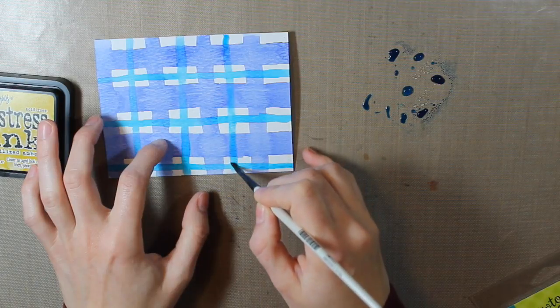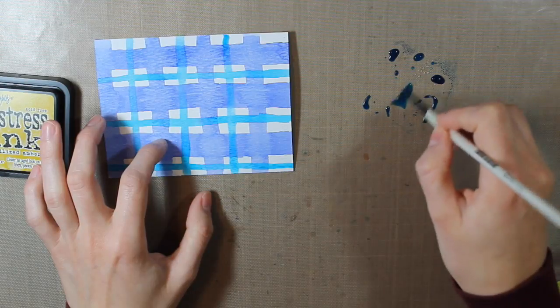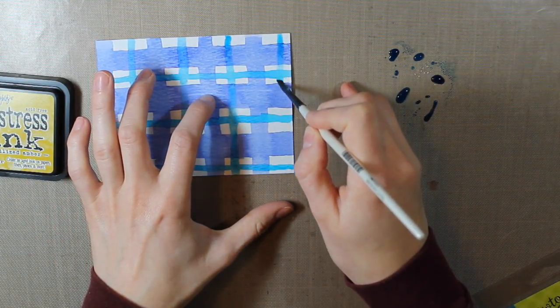And the fun part about this is when you go over that blueprint sketch even though it's completely dried it still kind of picks up a little bit of that color and makes it a different color when it's mixed with the Mermaid Lagoon ink.